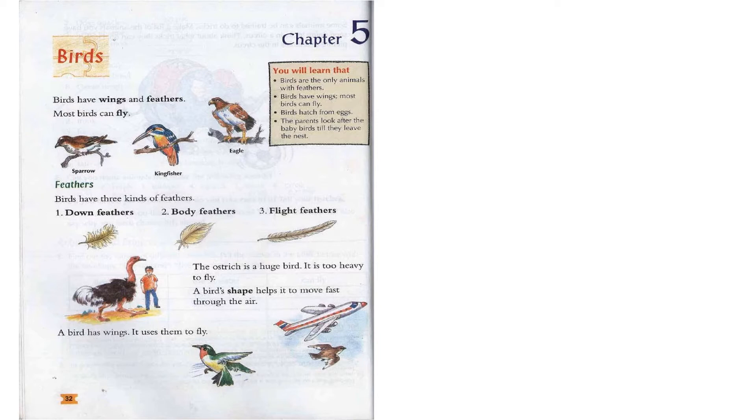Birds have wings and feathers. Most birds can fly. In the book there are three birds in the picture — sparrow, kingfisher, and eagle. As you can see they have wings and their bodies are covered with feathers. Among all of them, most can fly, but some of them cannot fly.